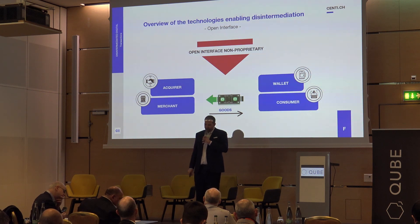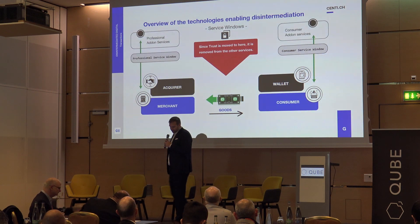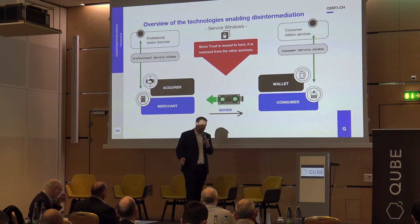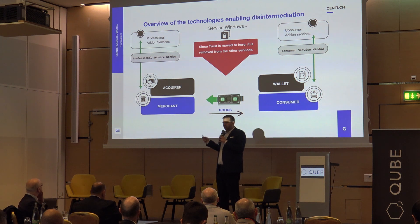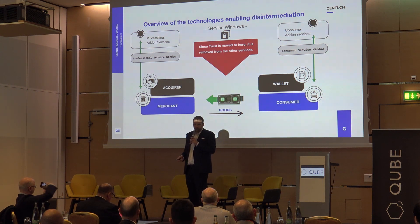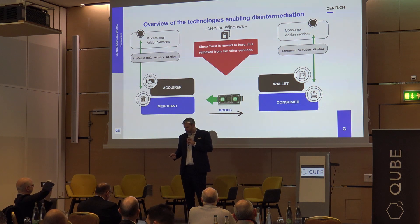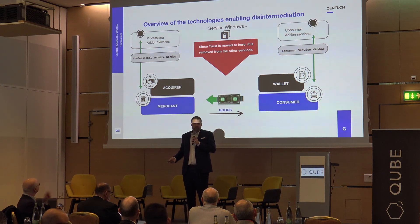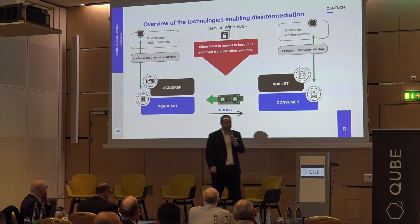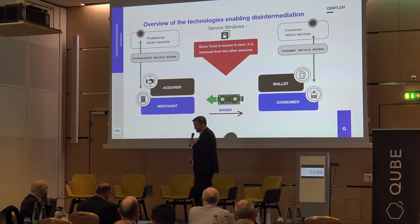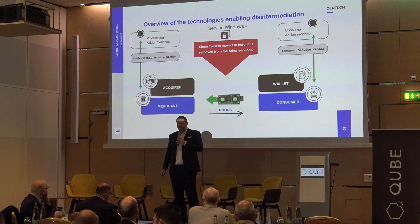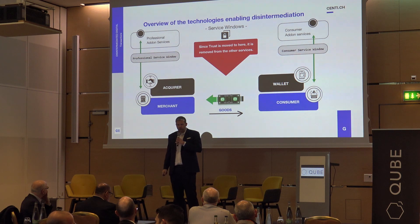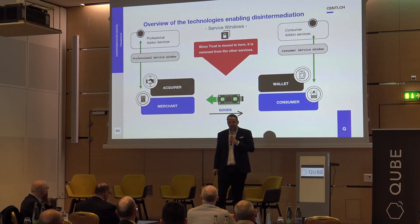By moving that trust element there, we enable a lot of other things. We can start offering services on either side through what I call a service window, and these services are then very direct. At Genti, for example, on the wallet side, we provide a wallet free of charge to every user who wants one. It's a user interface service to their own wallet — they actually own their wallet, we just provide them a user interface to it. In this wallet UI, we can offer a service window, for example Genti top-ups, and offer services directly to these clients.